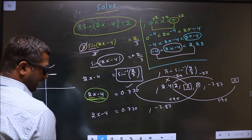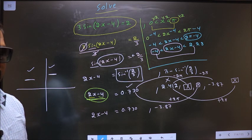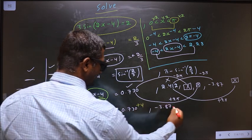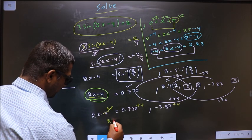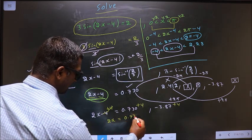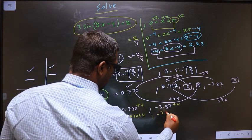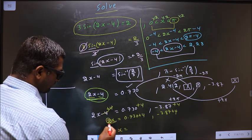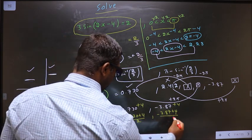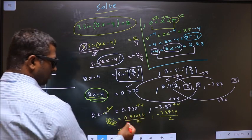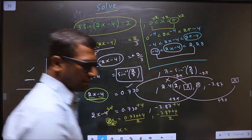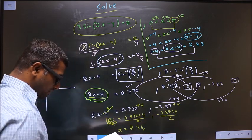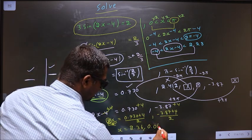We should get the values for x. For that, remove all the connections connected to x. First you should remove minus 4, for that you add 4. So we get 2x = 0.730 + 4, -3.87 + 4. Now to get x, I should remove this 2, for that you divide by 2. So x equals: put this in the calculator, you should get 2.36. Calculate this, you should get 0.0644.